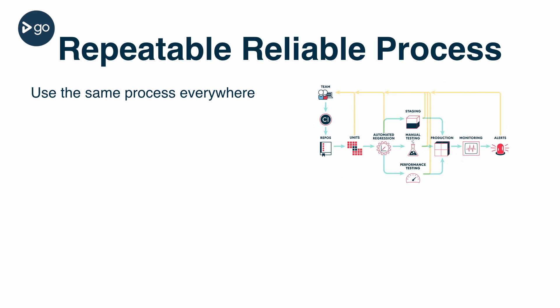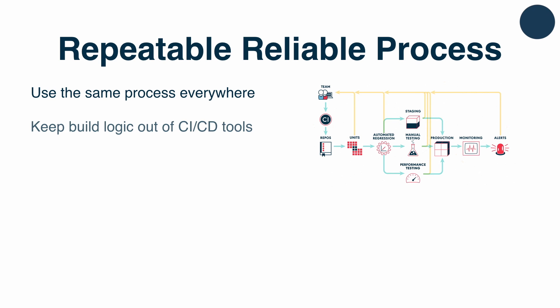Whether you're making a code change, updating an operating system package, or changing a configuration, it all needs to go through that same pipeline. When doing this automation, it's important to keep the actual logic out of your CI or CD tools. Some tools allow for scripting as part of their configuration, but you should not use it.